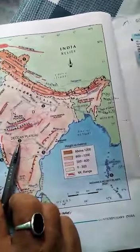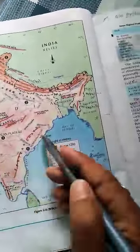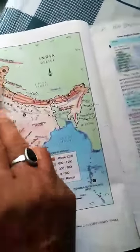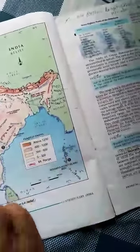These are coastal plains, great Indian desert, plateau region including Deccan plateau and Malwa plateau, plains, and mountains.